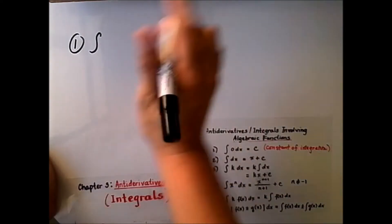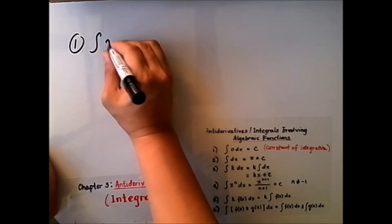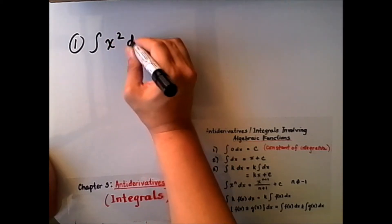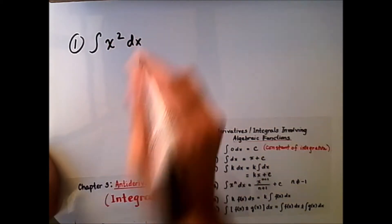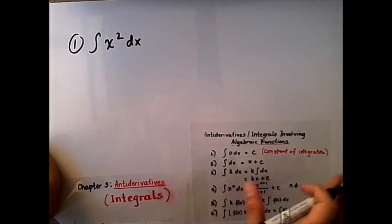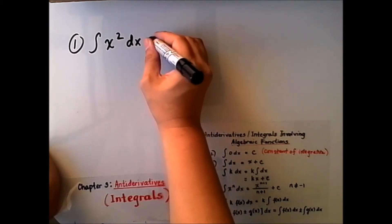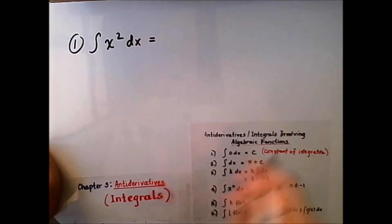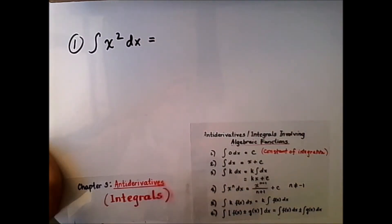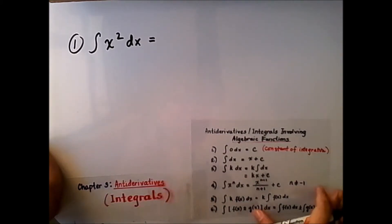Let's have the first example. Here we have the integral of x squared dx. Let us anti-differentiate x squared dx. We will apply the rules on how to find the anti-derivatives or integrals involving algebraic expressions.